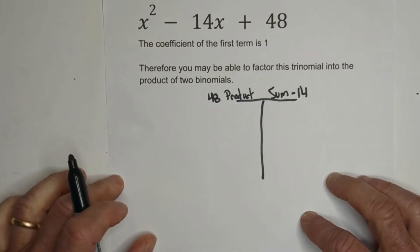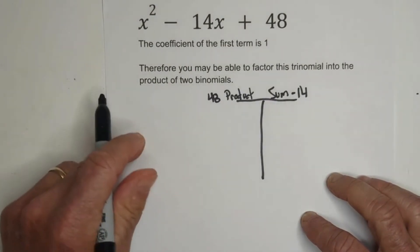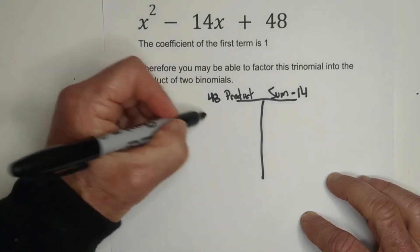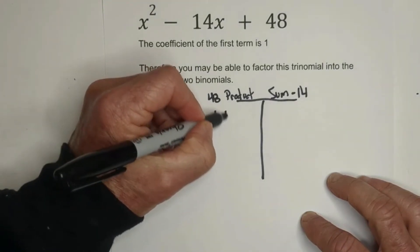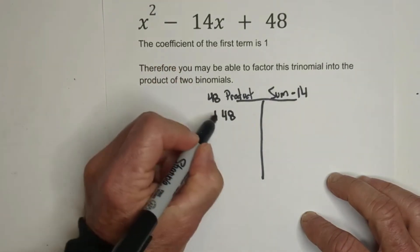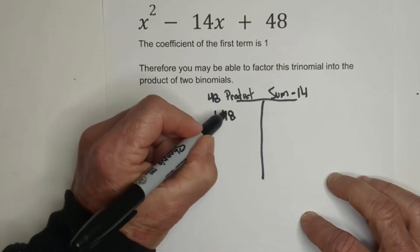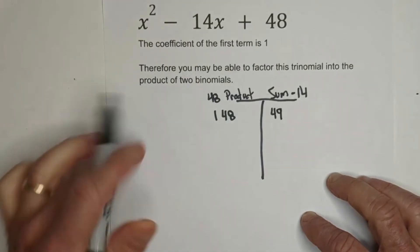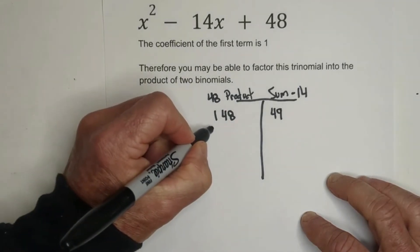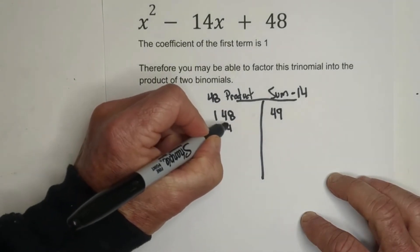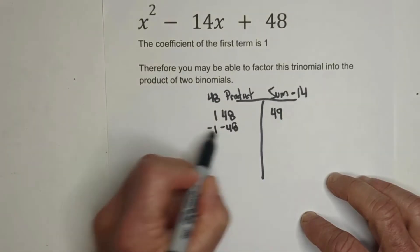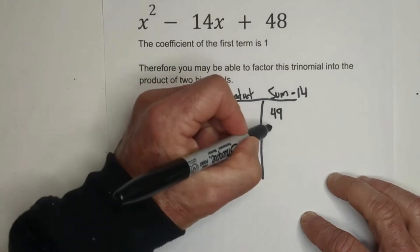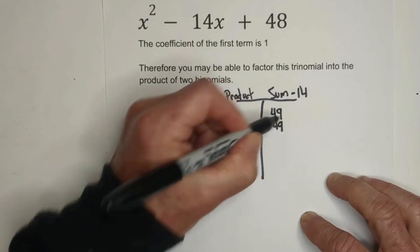Then all you do is start finding factors and adding them together. So here's what I mean. We can take 1 times 48. That does equal 48, but when you add them together, it's 49. So that's not negative 14x. We do know we're going to have to go negative 1 and negative 48. That does equal a positive 48, and that's a negative 49. So we have the sign correct.